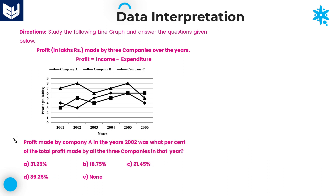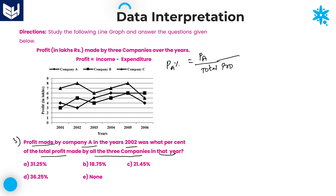Let us look at the third question. The profit made by company A in the year 2002 was what percent of the total profit made by all three companies in that year? We need to calculate the profit percentage of company A, which is: profit of company A divided by total profit of all companies together (A, B, C) multiplied by 100%.